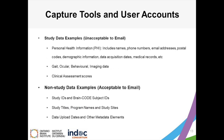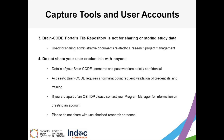Study data examples that are unacceptable to email include PHI, gait, ocular, behavioral and imaging data, and clinical assessment scores. Non-study data examples which would be acceptable to email include study IDs and BrainCode subject IDs, study titles, program names, study sites, data upload dates, and other metadata elements. Study data should not be stored on the BrainCode portal's file repository. The file repository is designed to store administrative documents to help with research project management, and is not designed to track or process study data for storage or sharing. This includes study data which may or may not contain PHI.